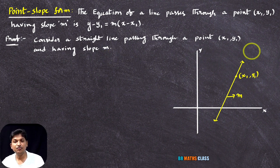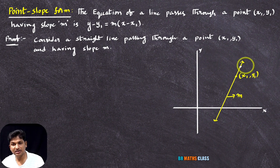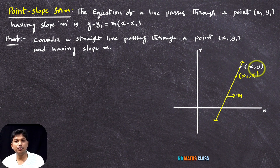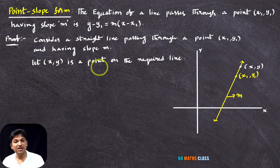Now, to find this line equation, I will take one more point on this line. You can take anywhere one more point on this line. For example, I will take a point here. What is this point? I don't know what point it is, so it's a variable point. I'll take this point as x, y. What I did here — I consider a point x, y on the required line. Let x, y be a point on the required line.